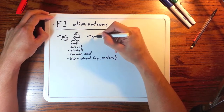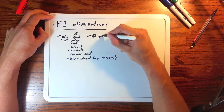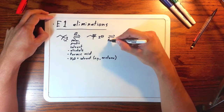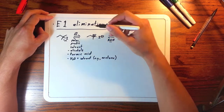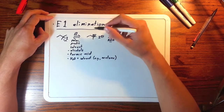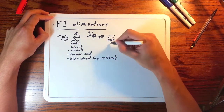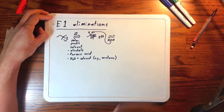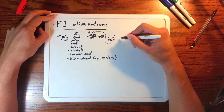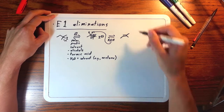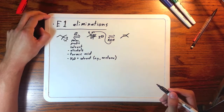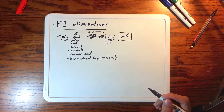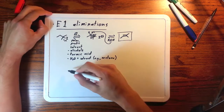First step: the halide comes off — the leaving group leaves. Now you have a carbocation and your iodide. Let's say we used a general alcohol as our solvent. One thing it can do at this point is come and pull off a beta hydrogen, creating the most substituted alkene that this carbocation can produce. It has three substituents and is the major product.